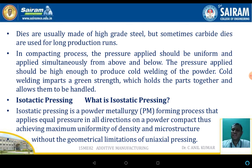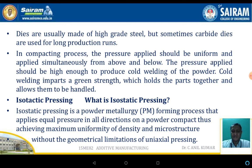In the compacting process, the pressure applied should be uniform and applied simultaneously from above and below. The pressure applied should be high enough to produce cold welding of the powder. Isostatic pressing is a powder metallurgy forming process that applies equal pressure in all directions on the powder compact, thus achieving maximum uniformity in density and microstructure without geometrical limitations.